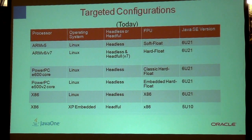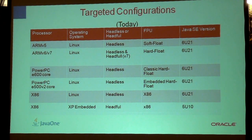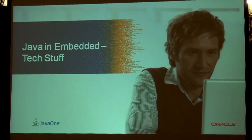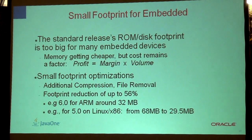Looking at targeted configurations going forward: Java 6 Update 21, as you can see on the right-hand side, is already ready for ARM versions 5, 6, and 7, PowerPC, and x86. XP Embedded support is coming — in fact, I think it's already out.